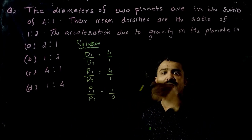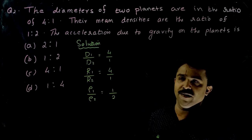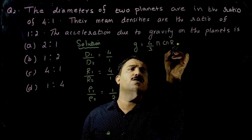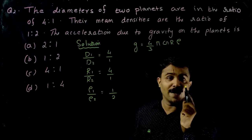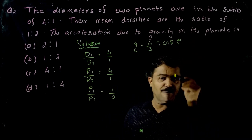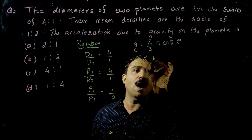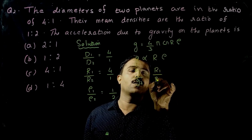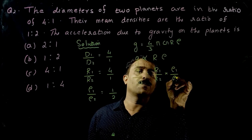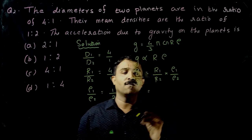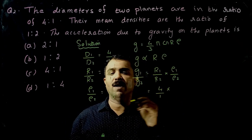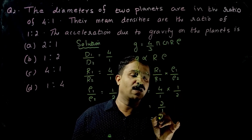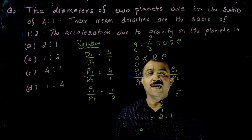Using g = (4/3)πGRρ, we have g directly proportional to R·ρ. So g1/g2 = (r1/r2)·(ρ1/ρ2) = (4/1)·(1/2) = 2/1. The answer is 2:1, so option A is correct.